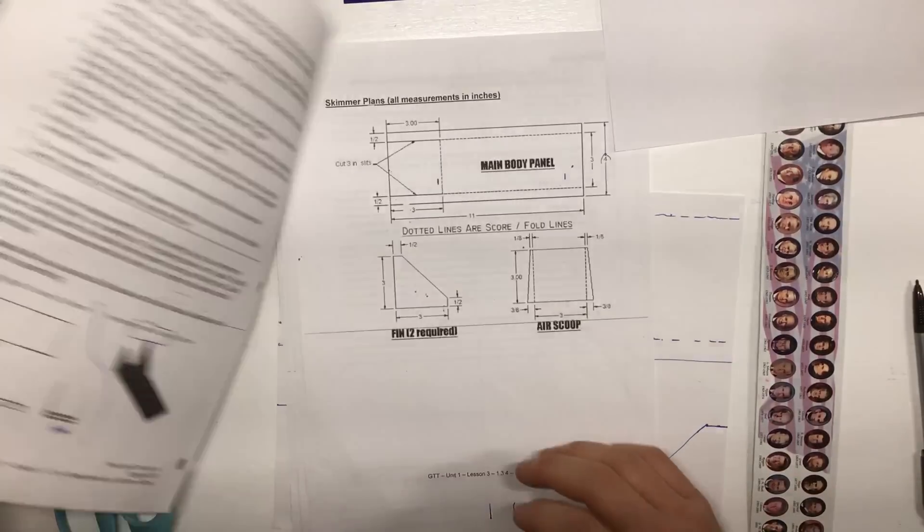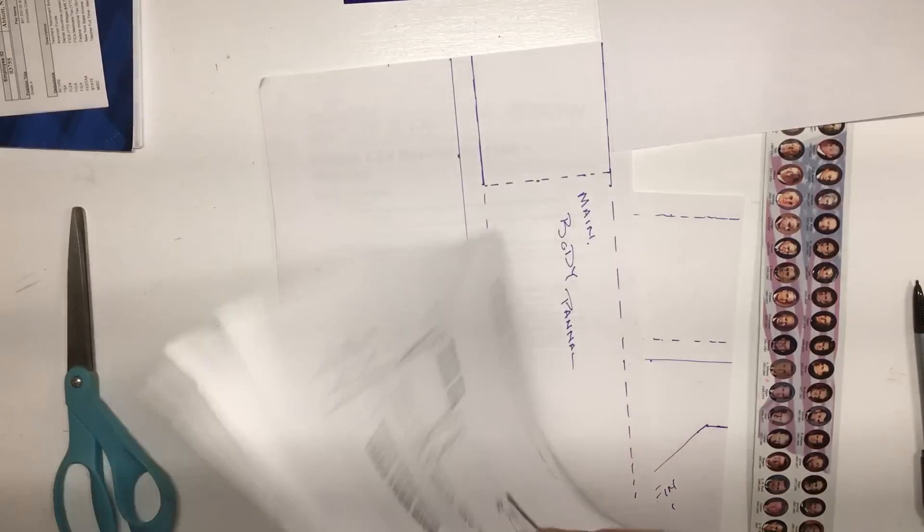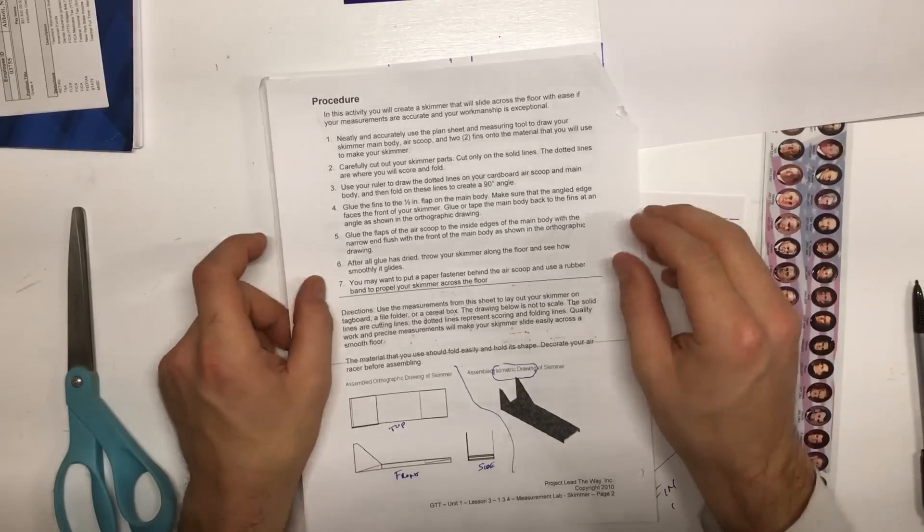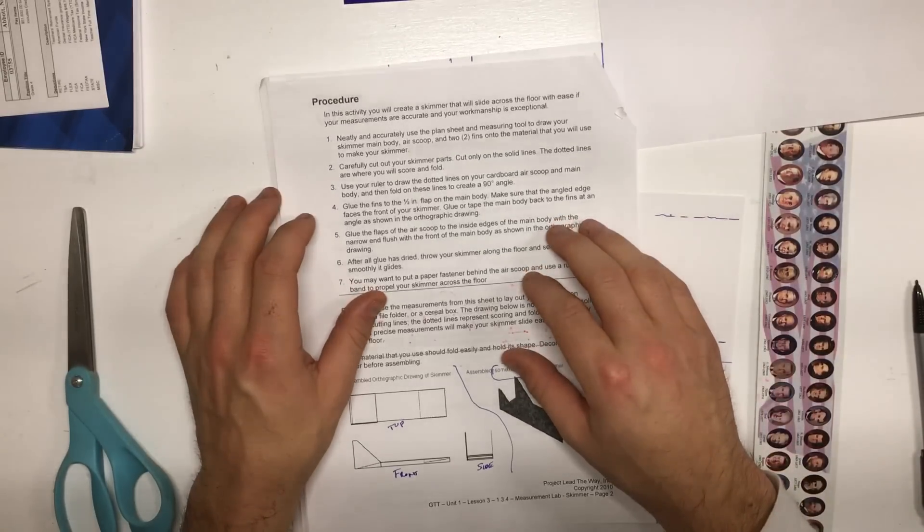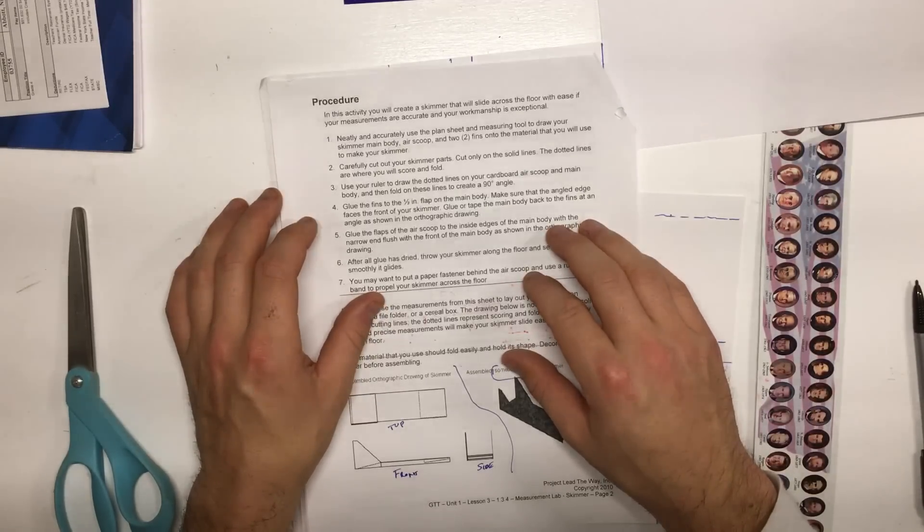Please turn your packet now to page two. I will read through the first step of the procedure. Please follow along. Neatly and accurately use the plan sheet and measuring tools to draw your skimmer main body, air scoop, and two fins onto the material that you will use to make your skimmer.